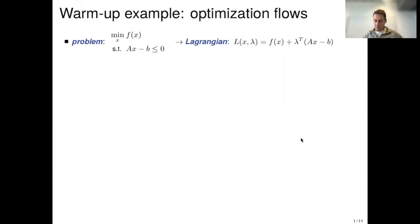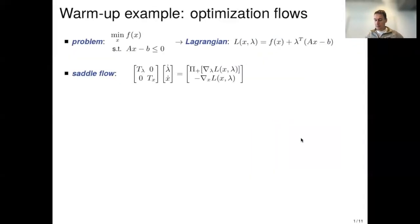We consider a constrained optimization problem: minimize the cost f of x subject to constraint Ax minus b less than or equal to zero. We form the Lagrangian of the problem with multiplier lambda which is non-negative, so this Lagrangian is convex-concave, and now we design continuous time flows that seek the saddle points. The most classic flow is due to Arrow-Hurwicz, called the saddle point flow. To seek saddle points, we increase in the direction of lambda to the Lagrangian, go up the gradient in lambda and go down the gradient in the primal variable x. We also need to project onto the positive orthant to ensure the multipliers remain non-negative.